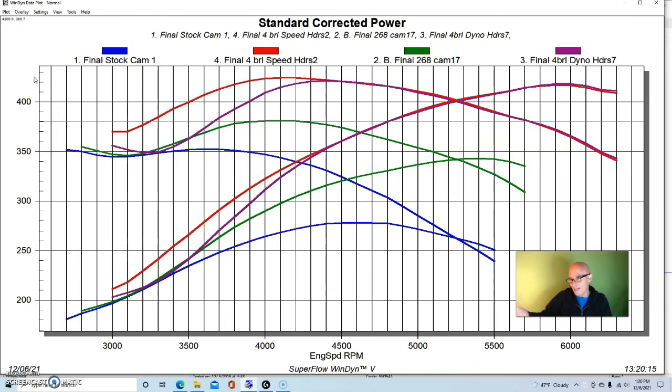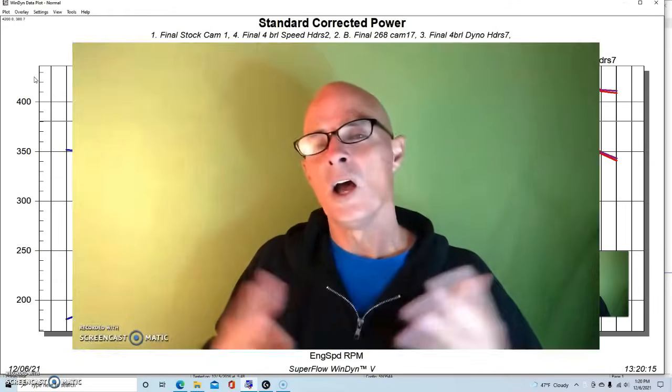It actually had a shorter collector length, it actually had shorter primary length as well, and it was just designed to fit in the chassis that the guy was running this thing. But I thought it was interesting that we picked up a ton of power down low and it basically had no effect on power above 4700 RPM. But lots of power down low. So it shows you that the right header can make a big difference in power, but sometimes just down low. Let's get to our conclusion.